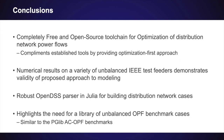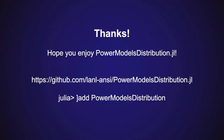In conclusion, we have developed a free open-source toolchain for the optimization of distribution network power flows, which complements existing tools by providing an optimization-first approach. We have demonstrated using power flow the validity of our physical models on a variety of unbalanced IEEE test feeders, and we have included a robust OpenDSS parser written natively in Julia to ingest distribution test case data. As a final point, we think that our work here has highlighted a dire need for a library of unbalanced OPF benchmark cases similar to the PGLib ACOPF benchmarks. Thank you for your attention.